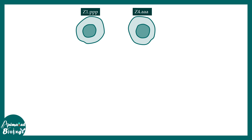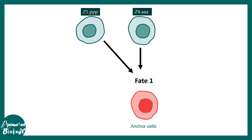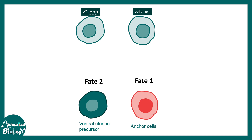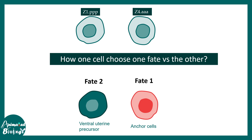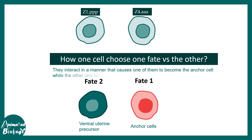Now let's try to understand the anchor cell. The anchor cell secretes LIN-3 — but why? Why not any other cell? How is the anchor cell defined in the first place? It turns out that in the early stage of C. elegans development there are two cell types known as Z1.ppp and Z4.aaa. Each has the capability to become the anchor cell, but one takes the anchor cell fate and the other takes a ventral uterine precursor fate. They interact in a manner known as lateral inhibition, forcing one cell not to choose a particular fate. This is the juxtacrine signaling we will now discuss.